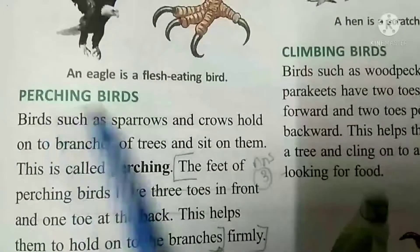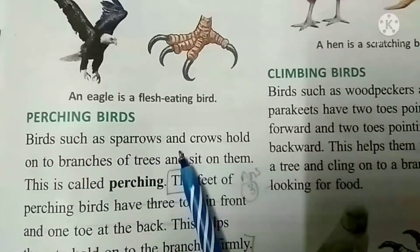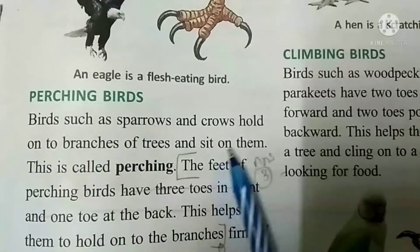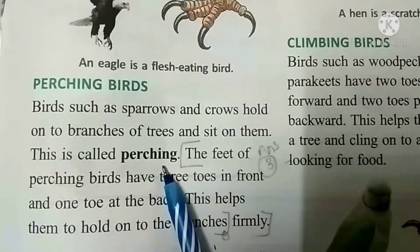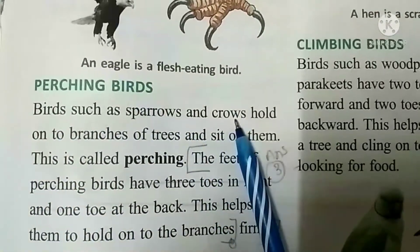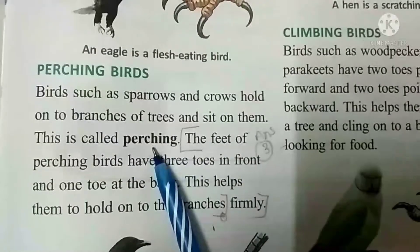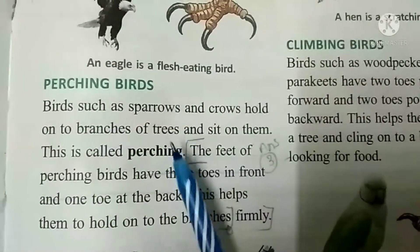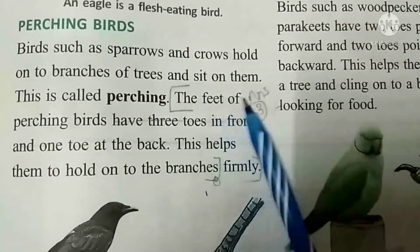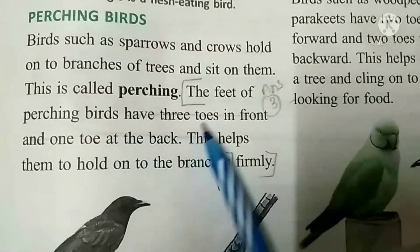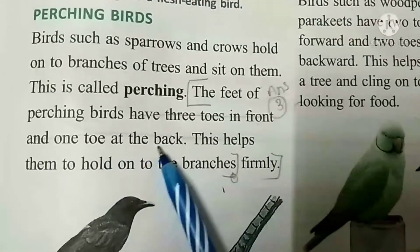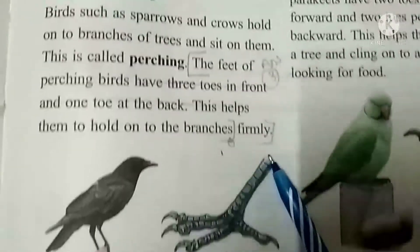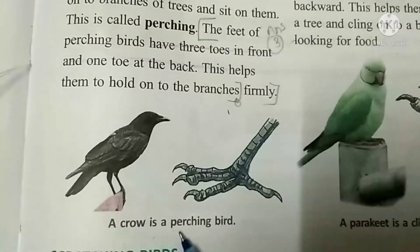Perching birds. Birds such as sparrows and crows hold on to branches of trees and sit on them — this is called perching. Sparrow aur crows — inhe perching birds kehte hain, kyunki ye branch ko achhe se pakad ke tree ke upar baith sakte hain. The feet of perching birds have three toes in front and one toe at the back. This helps them to hold on to the branches firmly. A crow is a perching bird.